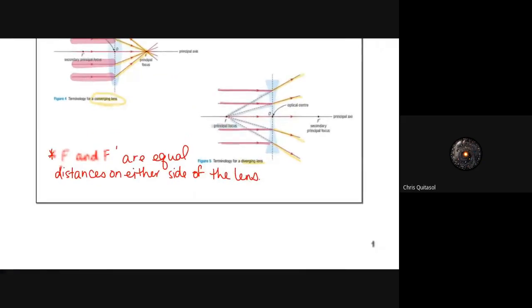So f and f prime are equal distances on either side of the lens. That's a very important detail—it gets a spider because it's very important. They're equal distances on either side of the lens. Please remember this.